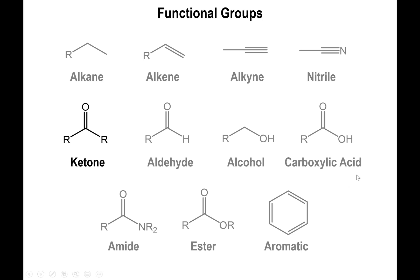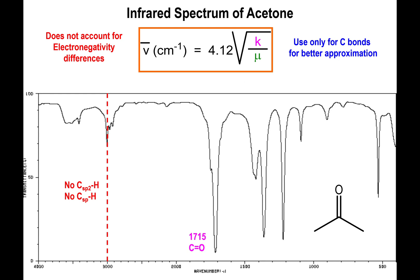Let's talk about the infrared spectra of ketones. When you look at the IR spectra, in this case of acetone, there's one peak in particular that pops up very conclusively, and it is the peak of the C=O double bond — the carbonyl group.